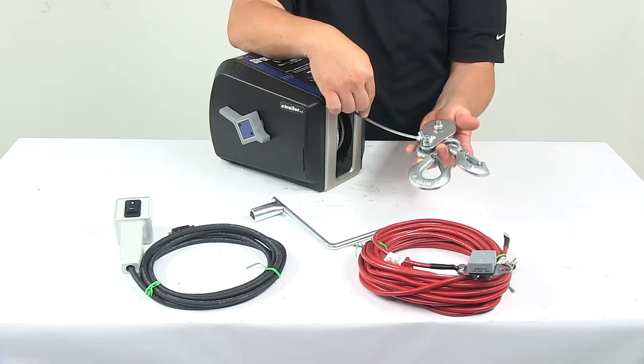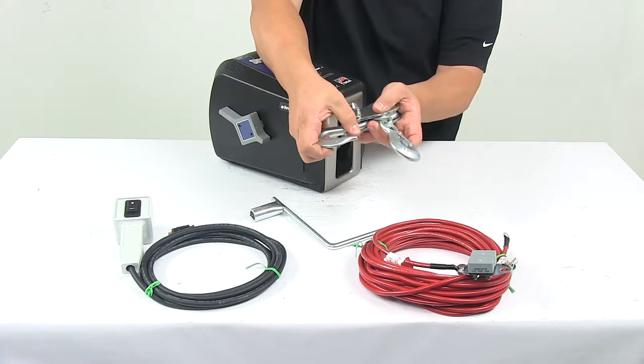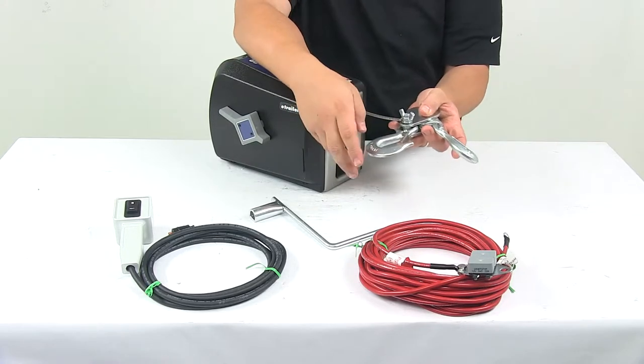This is 50 feet of cable, which is great for double line operation, and each hook has that safety latch or safety snap hook, which keeps the load securely attached.